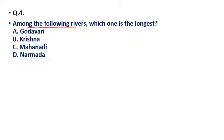Question 4: Among the following rivers, which one is the longest in peninsular India? Options: (a) Godavari, (b) Krishna, (c) Mahanadi, (d) Narmada. The correct answer is option A — Godavari is the longest river in peninsular India.